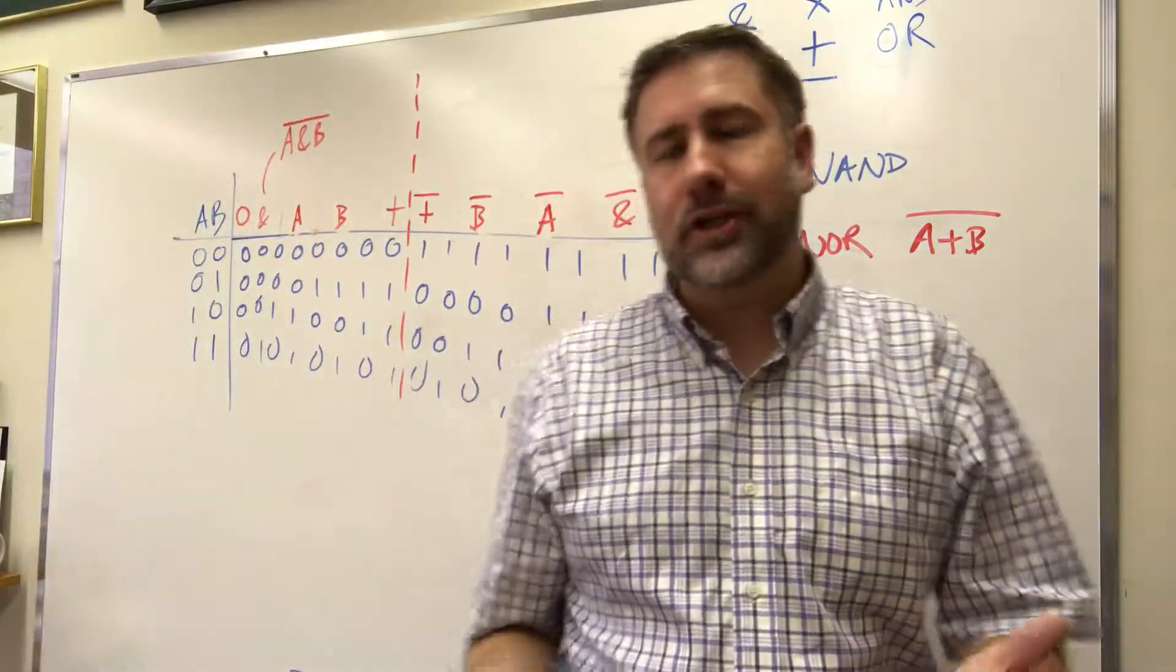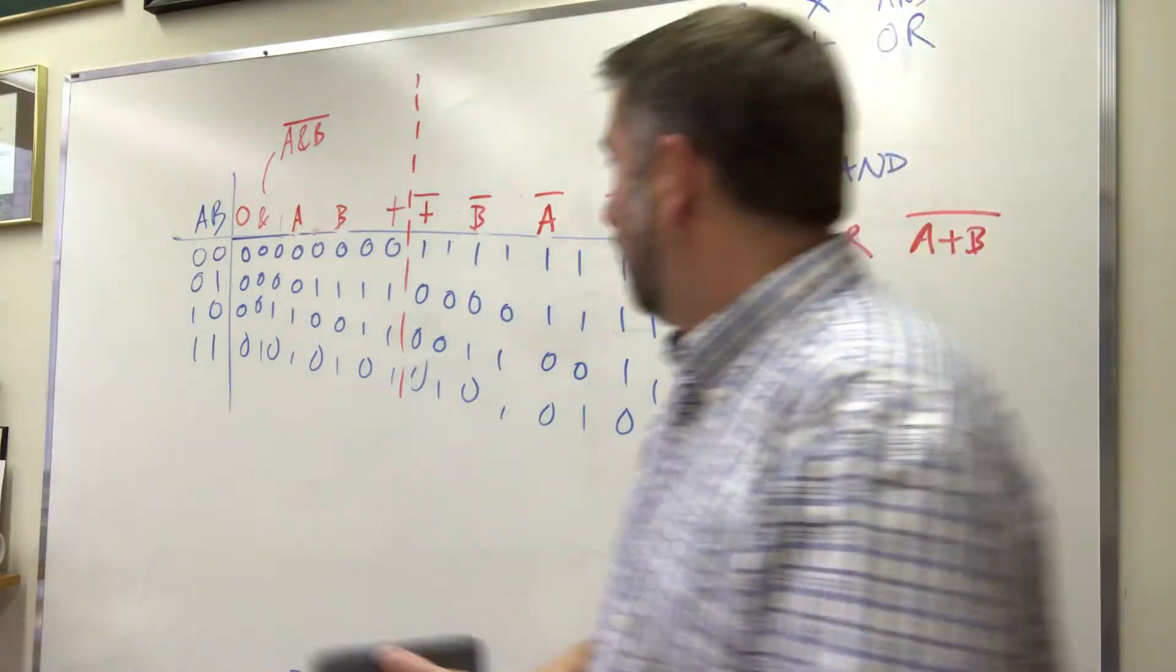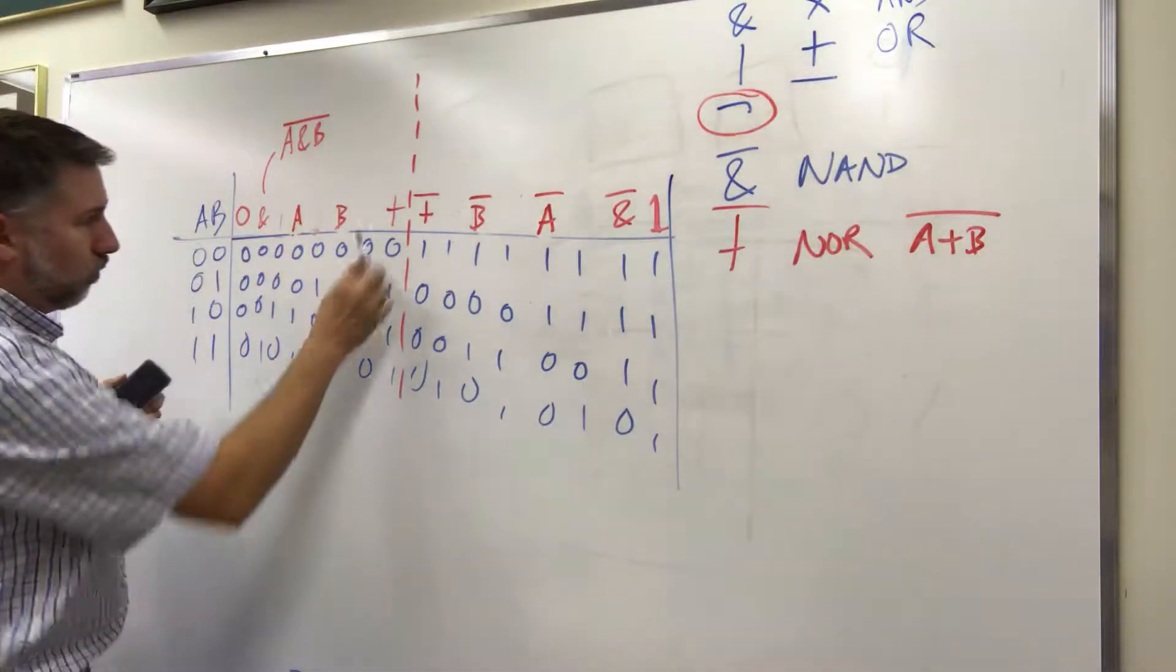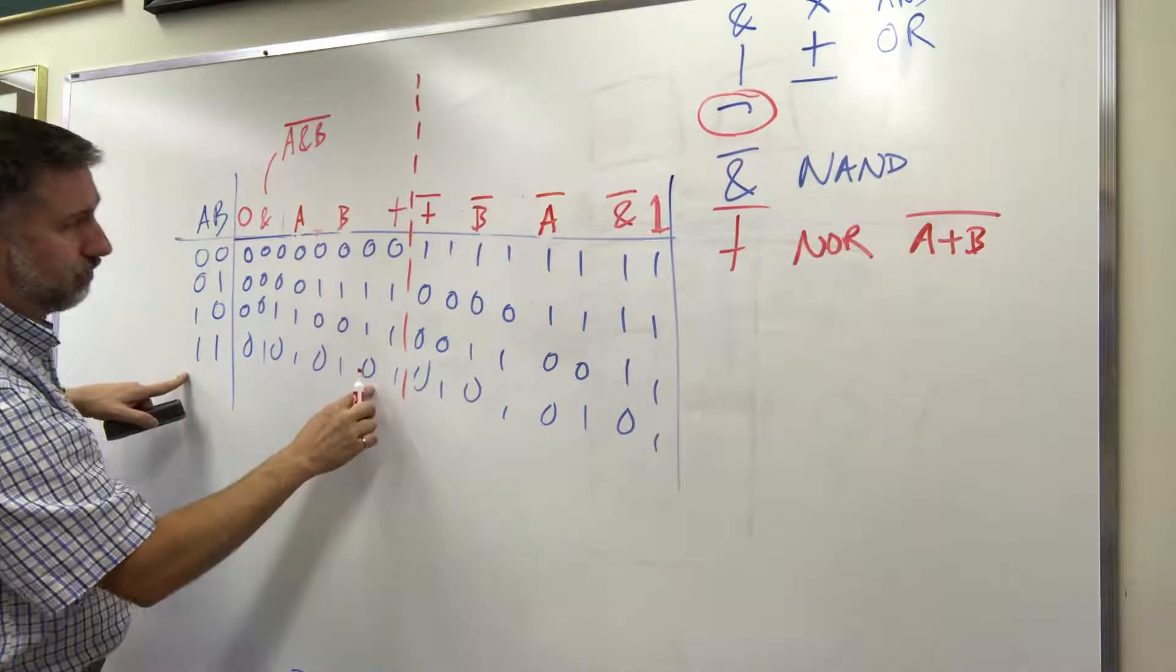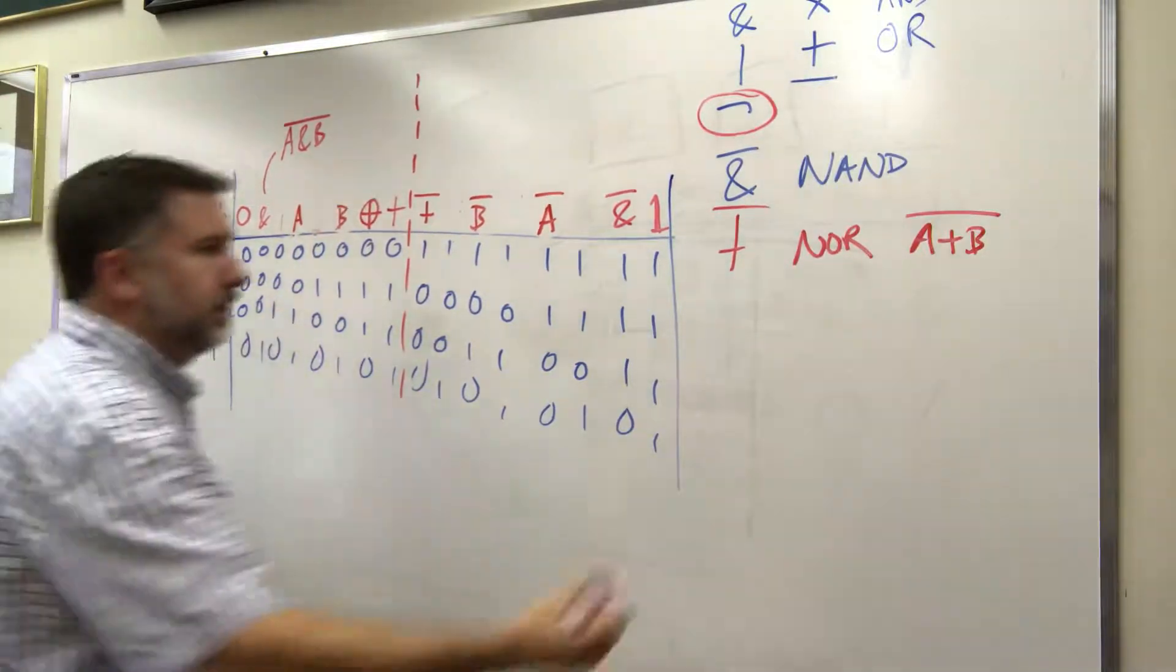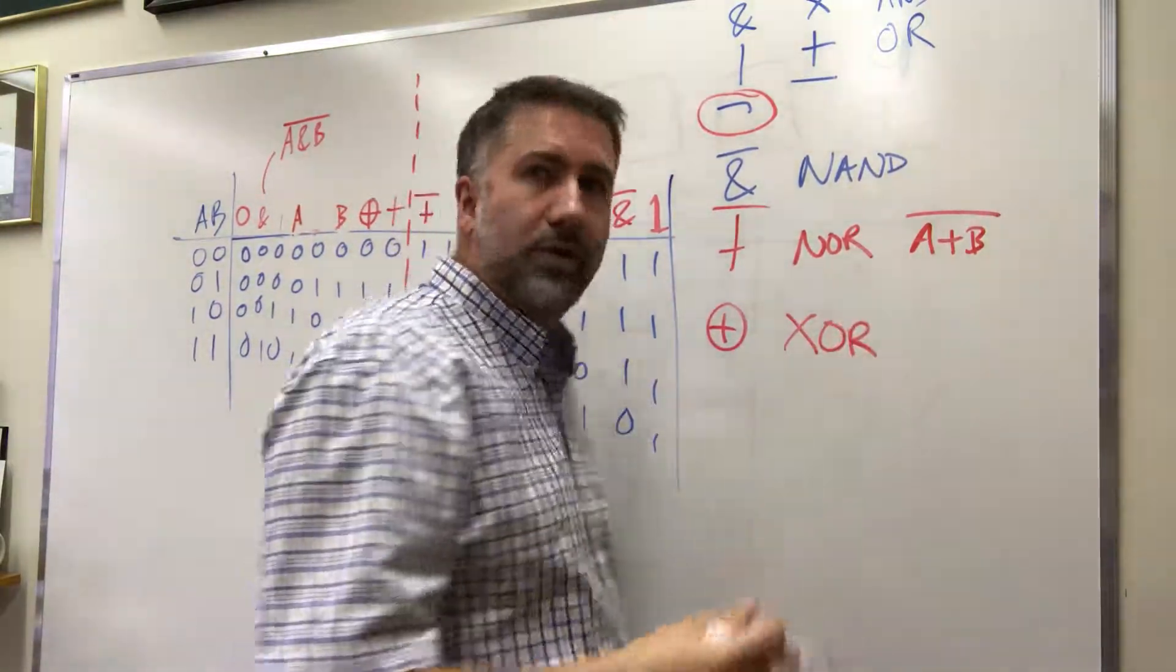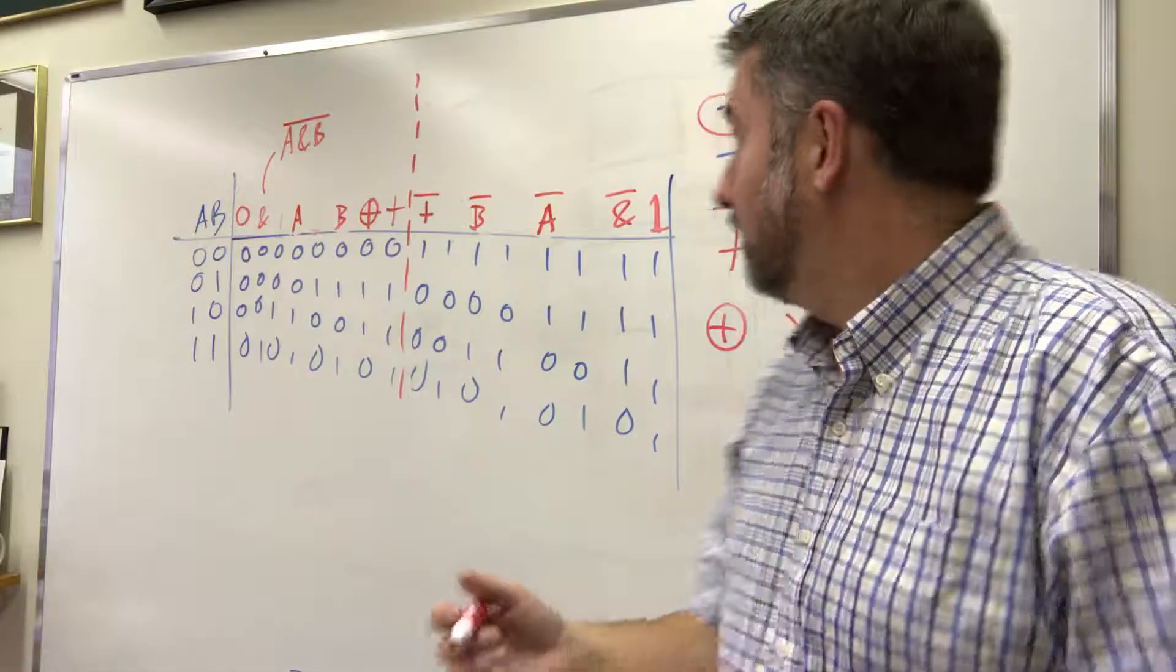But we do have a function that is true if one or the other but not both is true. That lives right here. One or the other a or b but not both of them. This is a special function that we call exclusive OR, or XOR. That's one or the other but not both. And that's there.